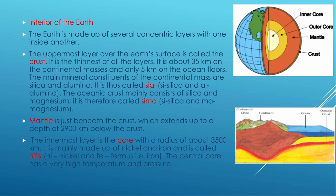There is a constant change in the interior of the earth. If you use the onion peel as a comparison, the earth has three layers: the uppermost layer is the crust, the second is the mantle, and the innermost layer is the core. The uppermost layer of crust is a very thin layer.